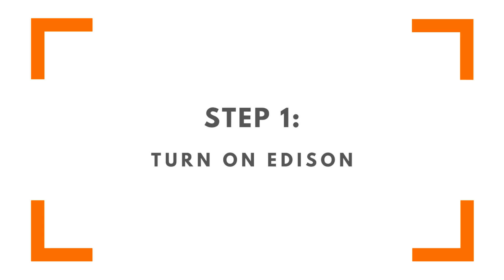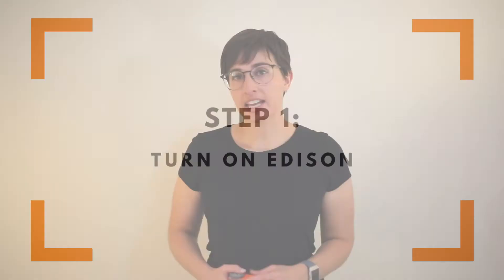First, make sure your Edison is turned on. If your robot's not on, it can't receive any information, including a download. So this might seem simple, but it's actually really important. If your power switch is in the on position but the red LEDs aren't flashing, then your robot's in sleep mode. It also can't receive a download while in sleep mode, so you'll need to wake it back up. To do that, flip the power switch from the on to the off position and then back on, or press the triangle button.